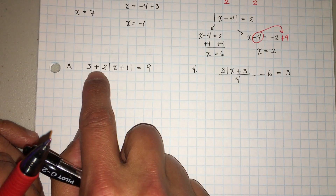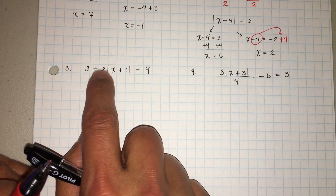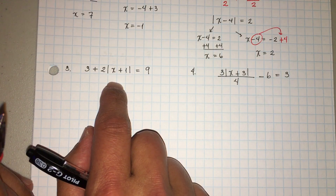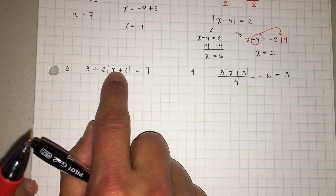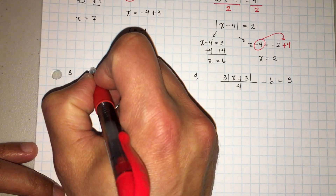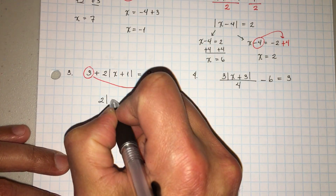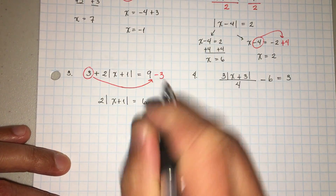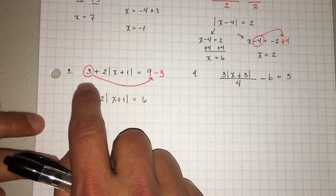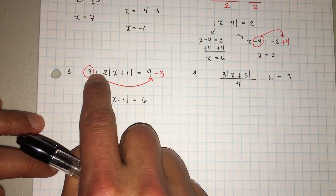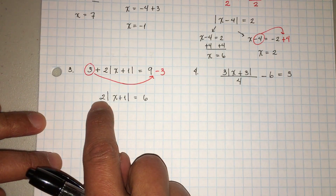Vamos a hacer este. Notice here that three is adding to the whole expression with the absolute value. A lot of times students say, 'Oh, three plus two is five,' and do that — pero no está correcto. Remember, you want to undo the order of operations. You can't combine the three with the two because the two is multiplying the absolute value and the three is adding. So you have to take this three across, it becomes a negative three. So now we have two times the absolute value of x plus one equals nine minus three, which is six.